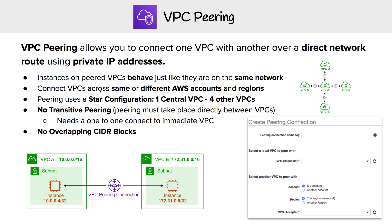There are some limitations around the configuration. When peering, you're using a star configuration — you'd have one central VPC, and then you might have four around it. For each one, you're going to have to have a peering connection. There's no transitive peering, meaning if VPC C wants to talk to VPC B, the traffic is not going to flow through A — you would actually have to create another direct connection from C to B. Communication only happens to the nearest neighbor.